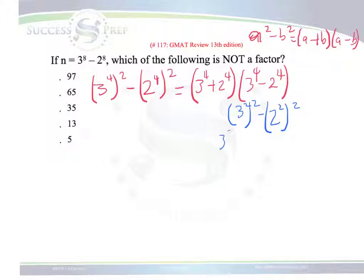which breaks up as 3 to the 2 plus 2 to the 2 and 3 to the 2 minus 2 to the 2. And we still have the 3 to the 4 plus 2 to the 4 option.